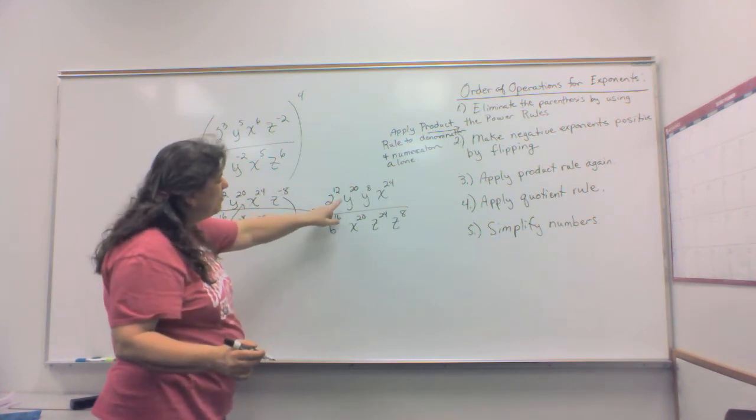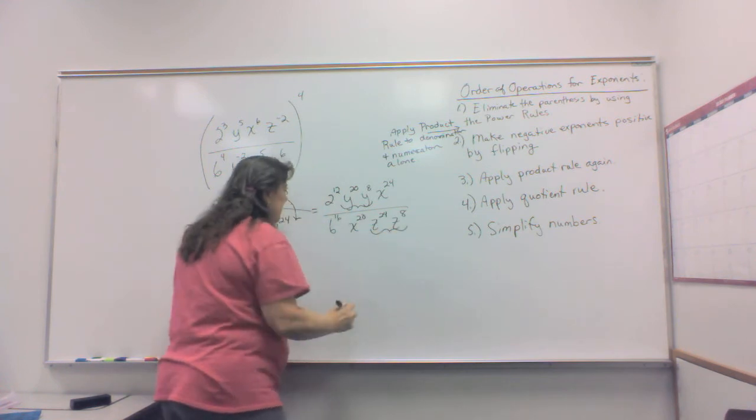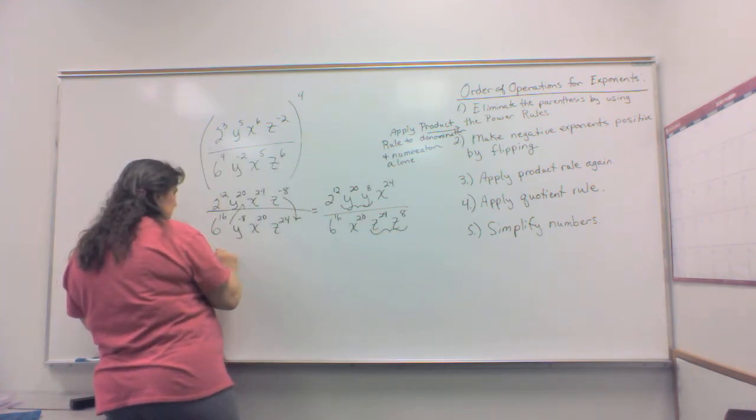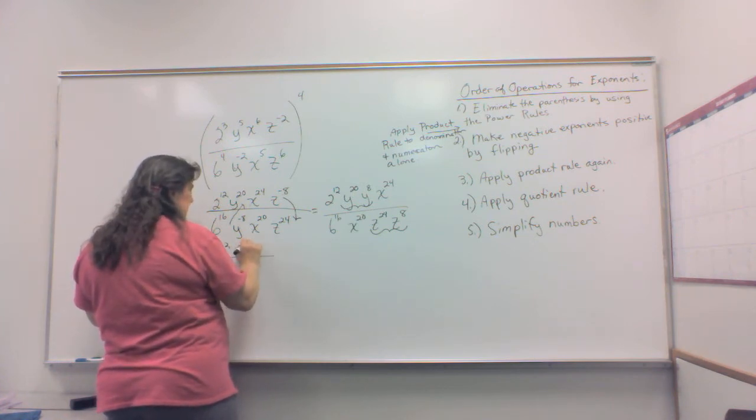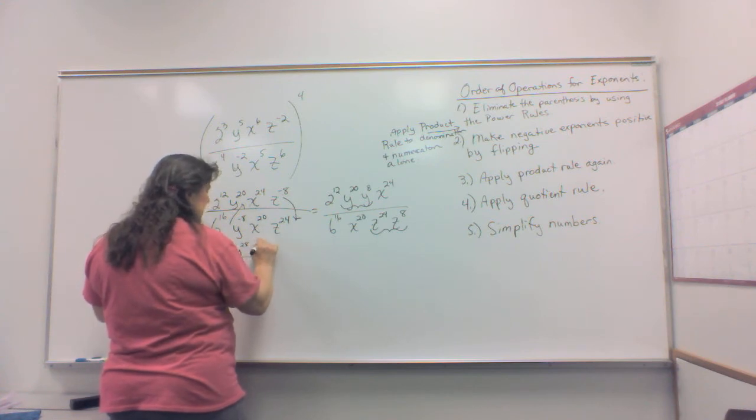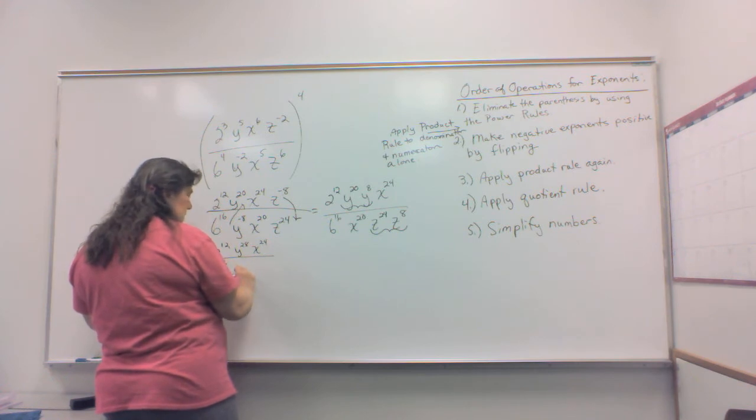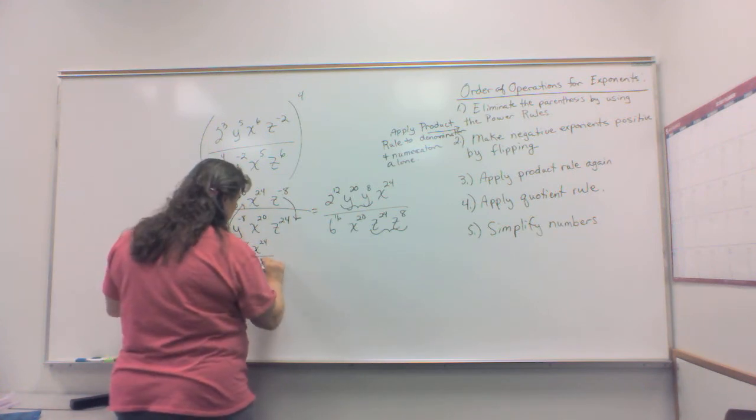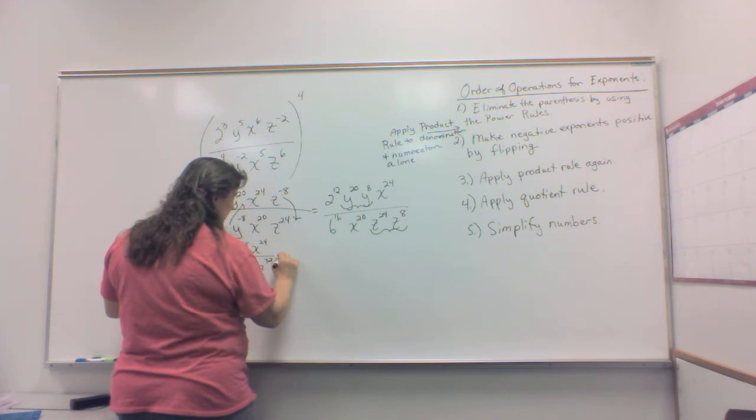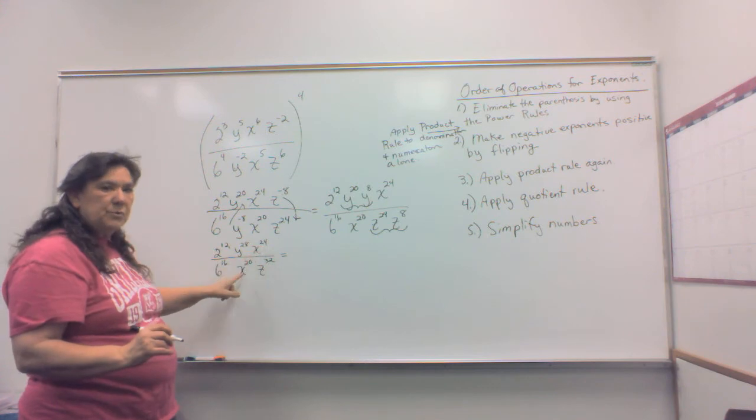Now, we can apply my product rule. Notice there's a product rule here and a product rule here. So I have two to the 12th over y to the 28th and x to the 24th. On the bottom, I have six to the 16th and x to the 20th and z to the 32nd. Okay? I have one quotient rule to do right here.